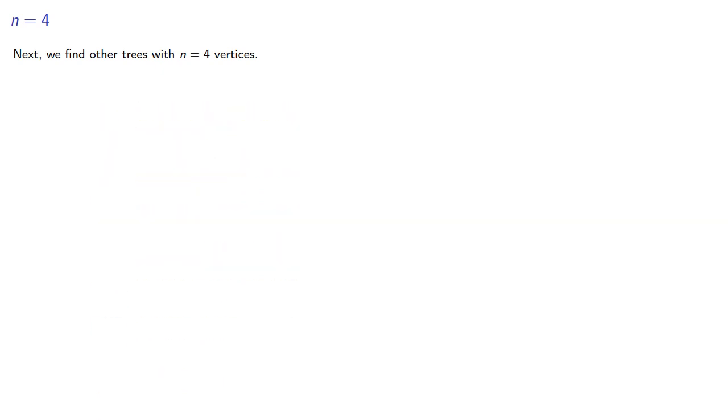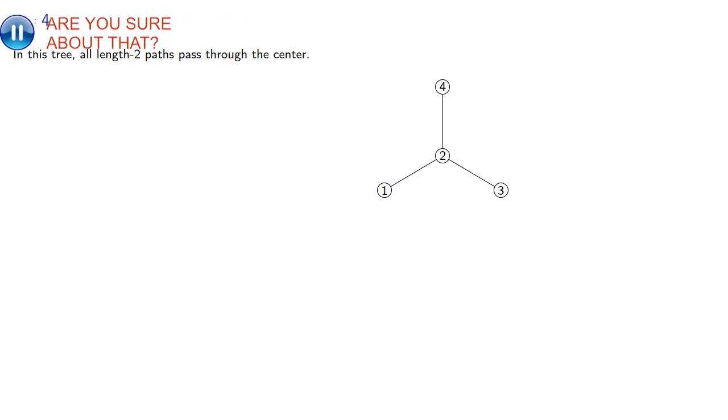One possibility is a star. Now, there's 4 factorial ways to label the 4 vertices, but how many are distinct? So remember, we're defining distinct labelings based on whether the paths appear in both. So in this tree, all length to paths must pass through the center. So if we change the label of the center vertex, we get a different labeling.